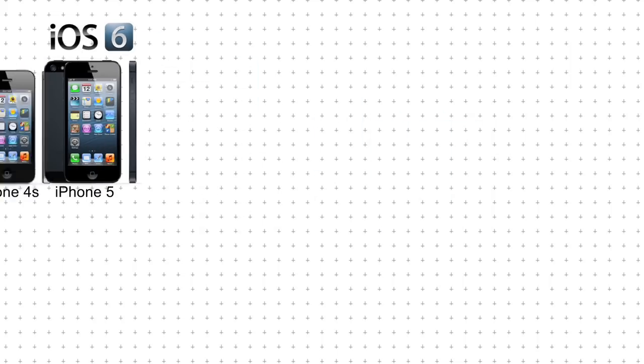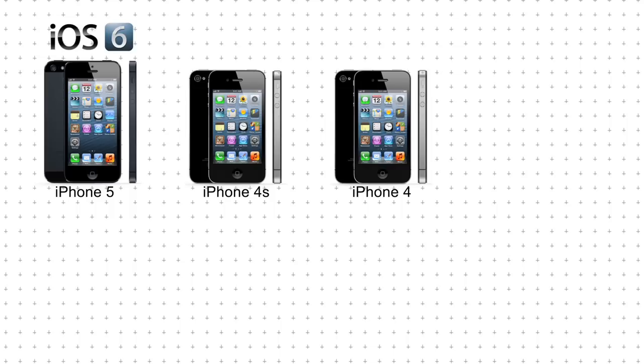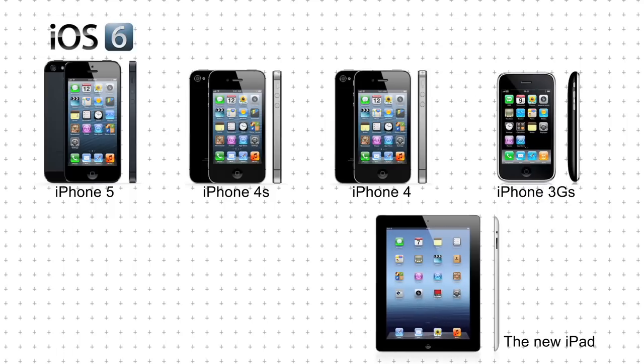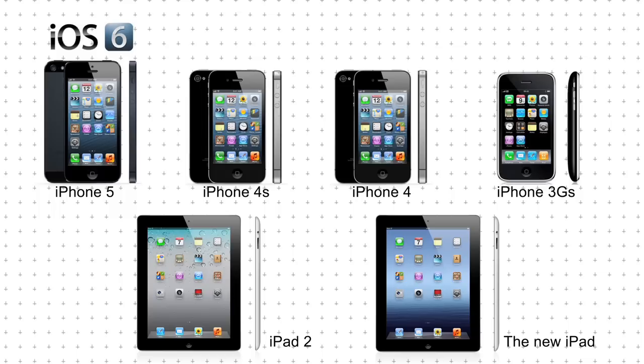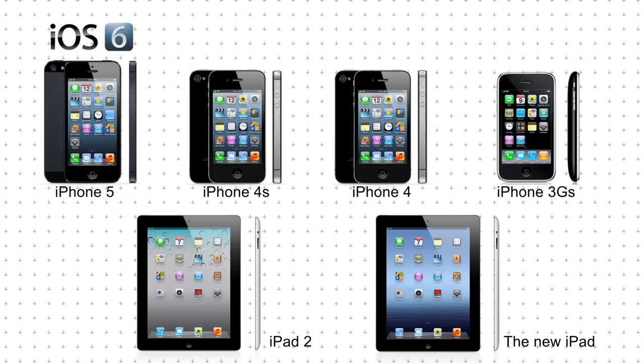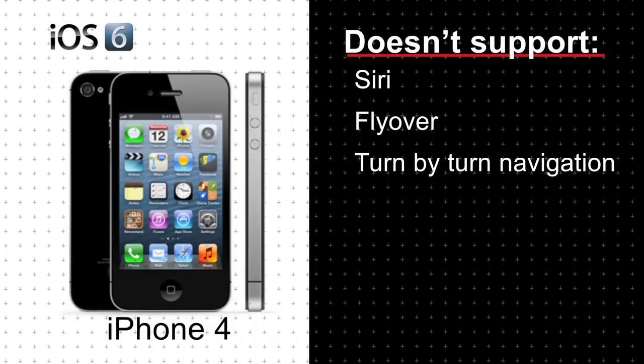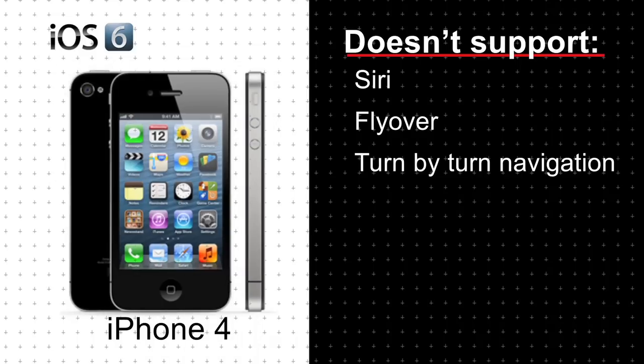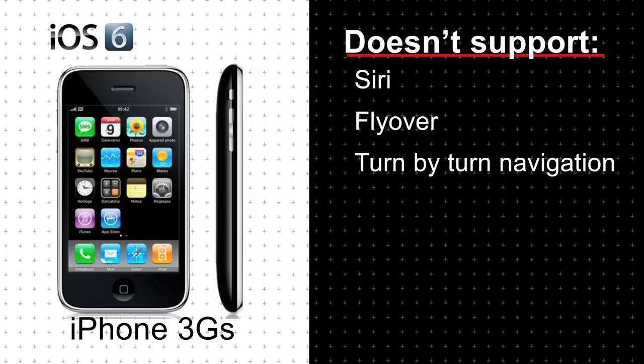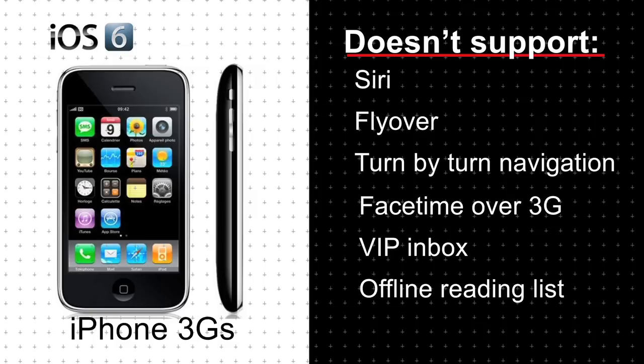iOS 6 launches on the iPhone 5, but is available for the iPhone 4S, iPhone 4, iPhone 3GS, new iPad and iPad 2, but not the original iPad. Not every feature is supported by every device though. The iPhone 4 doesn't have Siri, Flyover or turn-by-turn navigation. In addition, the iPhone 3GS doesn't get FaceTime over 3G, VIP inbox or offline reading. Check Apple's website to find out more.